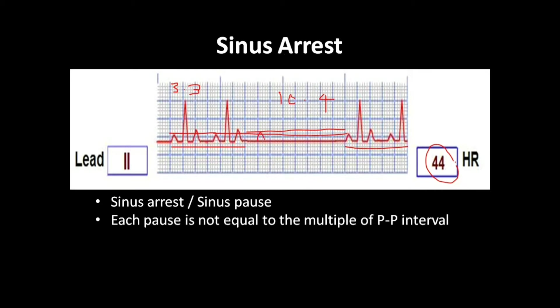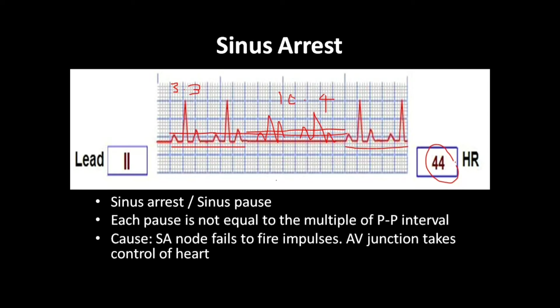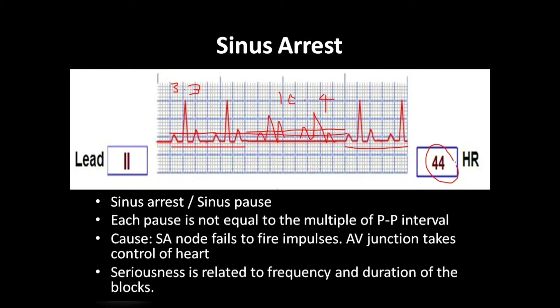There will be missing of 2 or more PQRST waves. The sinoatrial node fails to fire impulses, and the AV junction takes control of the heart in this case. The seriousness is related to the frequency of appearance of these missing waves and the duration of the PP intervals — as the duration increases, the prognosis of the condition decreases.